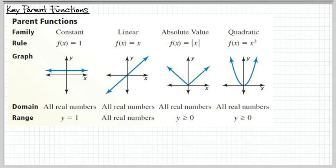We're going to start off by looking at four different function families: the constant family, the linear family, the absolute value, and the quadratic. We have the most basic equation for each one of those written right up here. We have our domain and range for each one of them, and we've been talking about domain and range.